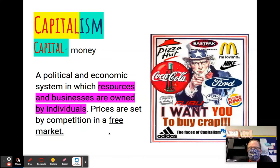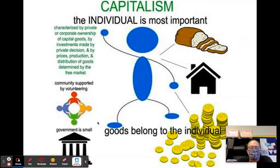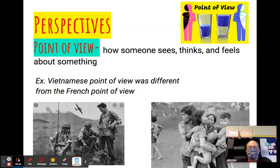Capitalism is different than communism. In capitalism, the individual is considered most important. Goods belong to the individual; people have private property, private businesses, and they buy stocks. You work at a job for somebody who owns a company in the private sector, although there are public jobs in the United States too, so we're not totally capitalist — we have some forms of socialism as well. But overall capitalism is about selling things and making profit.